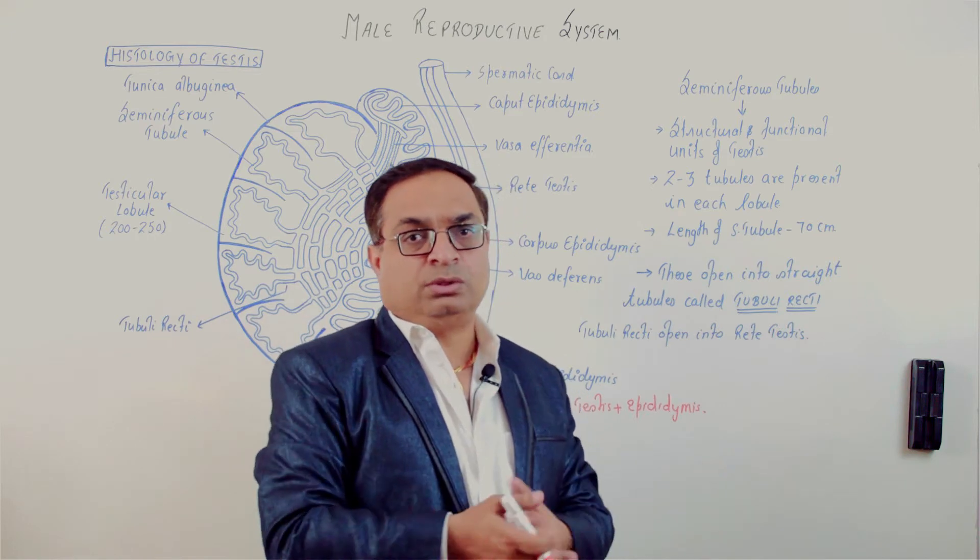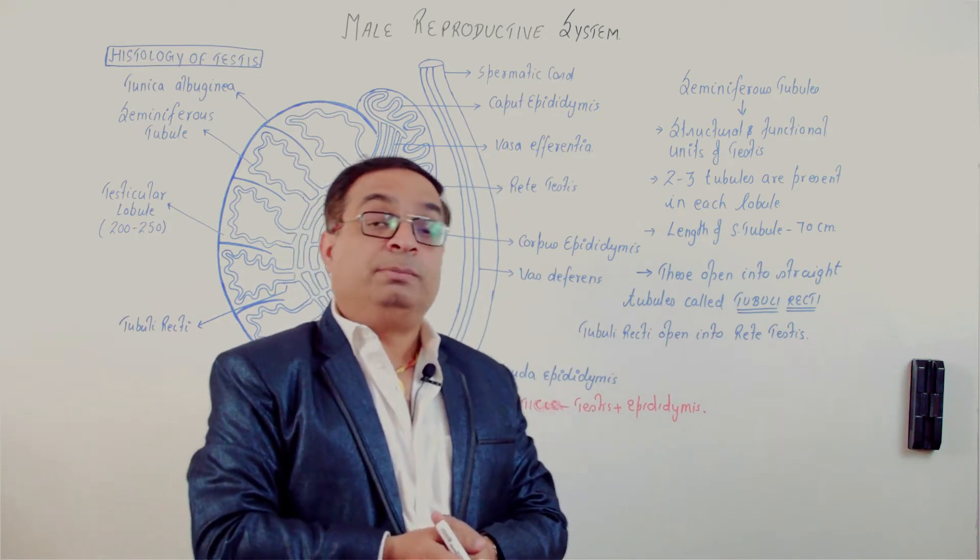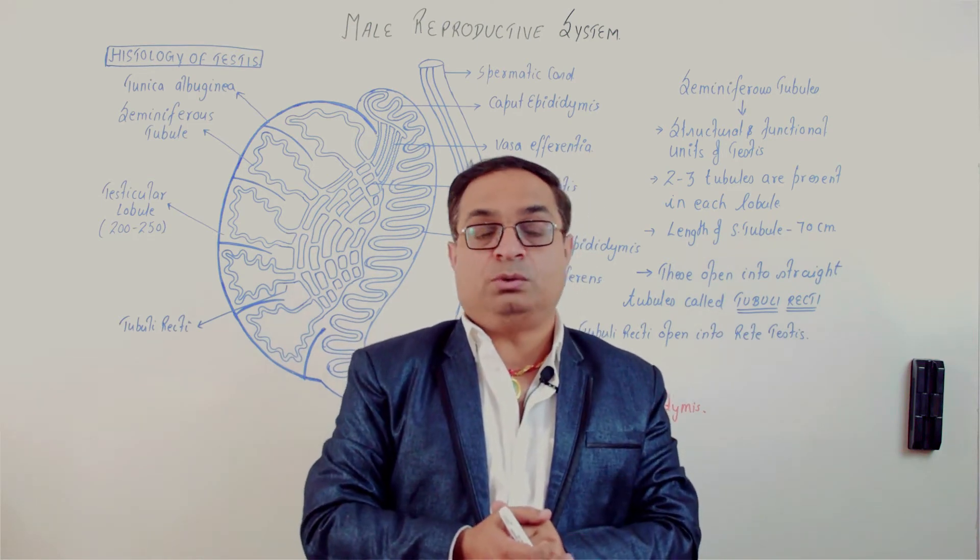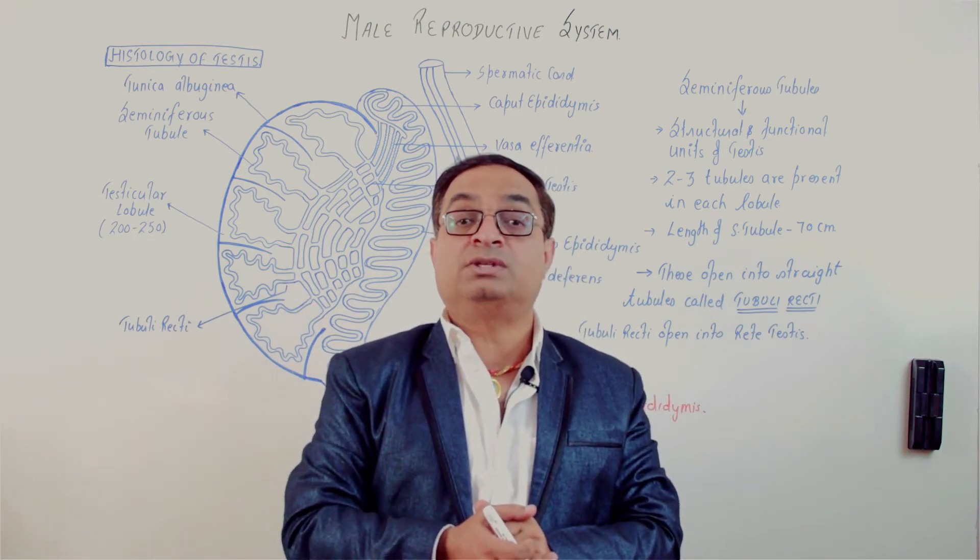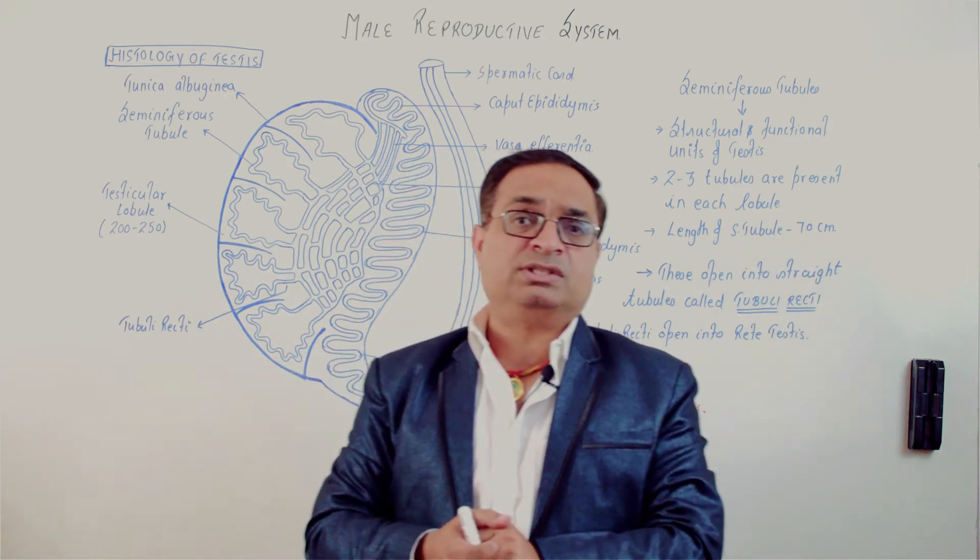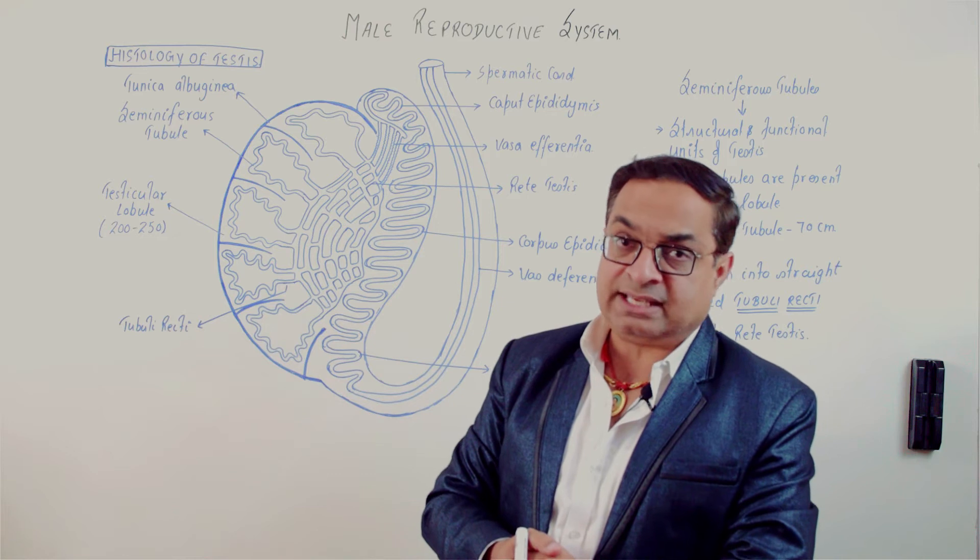So there are two testes, totaling 28 grams. You will be surprised to know that in one second, one gram of testicular tissue produces 1000 sperms. In one gram of testicular tissue, 1000 sperms are produced per second.